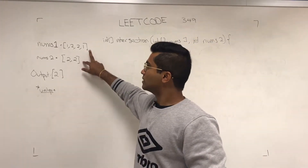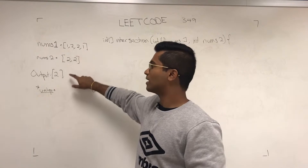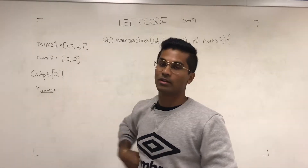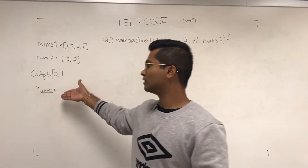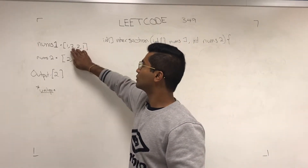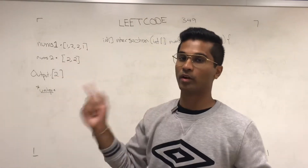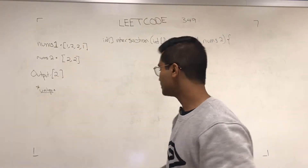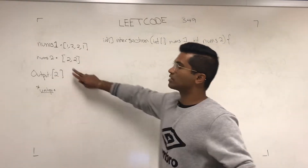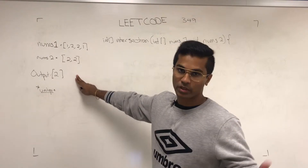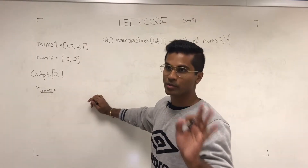The input is two arrays and the output has to be an array, but they only want the unique ones. So technically there are two twos and two twos, but they only want one two. Now, because they want uniqueness, we can use a set of integers to keep track.